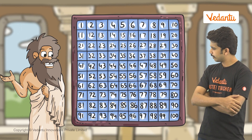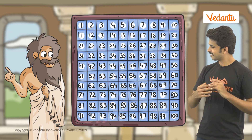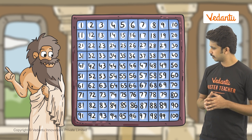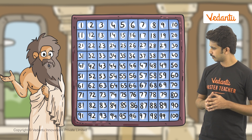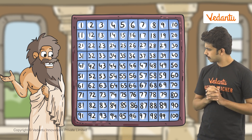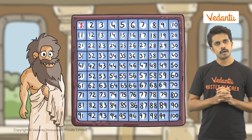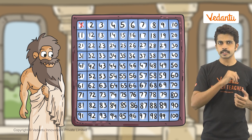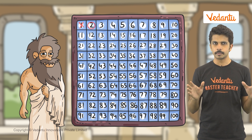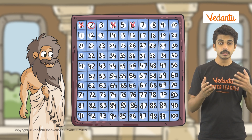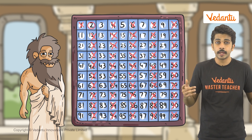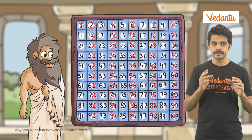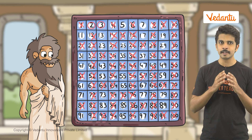The sieve is a great trick to find all the prime numbers up to 100. To find those, let us start with number 1. As we have seen, 1 is not a prime number, so we can cross it out. Since 2 has no other factor smaller than itself except 1, we encircle 2. We can cross out all other multiples of 2 — that is 4, 6, 8, and so on — as they have more than 2 factors. Similarly, we can encircle 3 and cross out all the remaining multiples of 3.